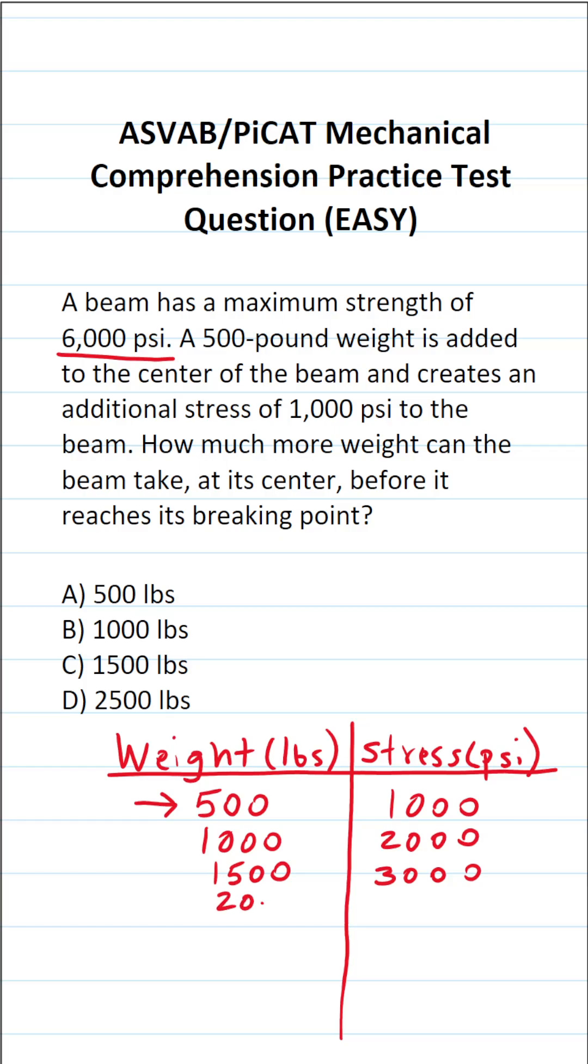Let's add 500 more pounds. That brings us to 2,000 pounds of weight on the beam. That corresponds to 4,000 PSI. If we add 500 more pounds of weight, that brings us to 2,500 pounds. That corresponds to 5,000 PSI of stress on the beam.